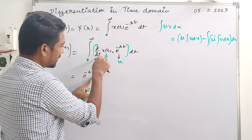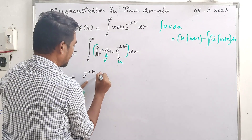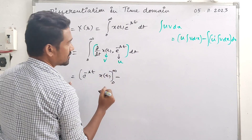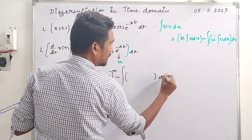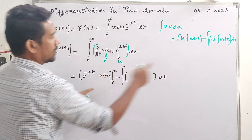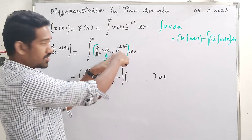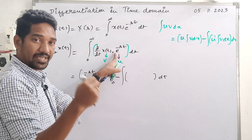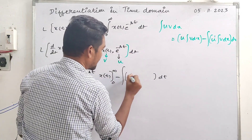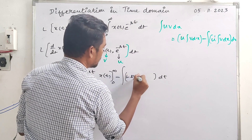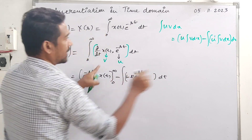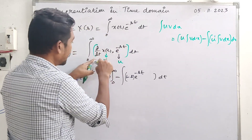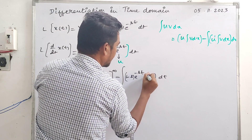If we integrate D/dt of x(t), the integral and derivative cancel, and x(t) appears as it is. The limits 0 to infinity apply, minus the integral. U' — the first derivative of e raised to minus st — gives minus s times e raised to minus st. And the integral of V: D/dt of x(t) integrated cancels with the existing d/dt, and we have x(t).